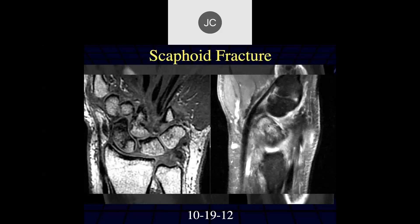This is a scaphoid fracture that was unstable with flexion. For open reduction — not unusual in acute scaphoid fractures — CT is much easier to obtain than MRI and is probably all you really need for surgical planning, although other injuries can also occur with scaphoid fractures. CT is enough to do the job.